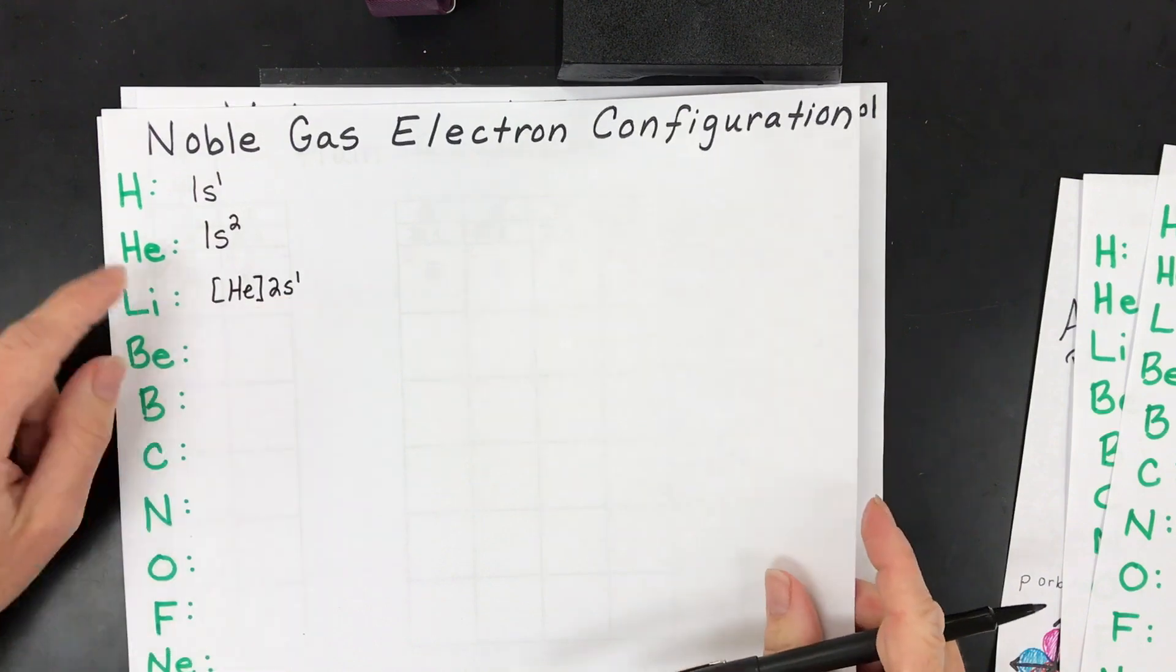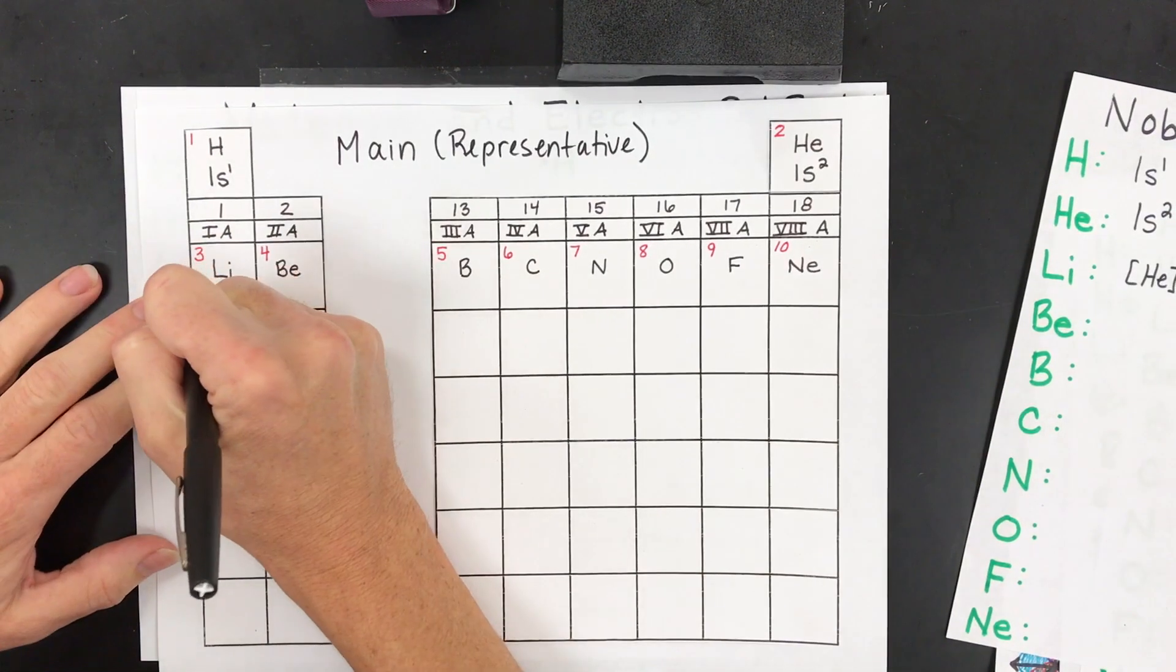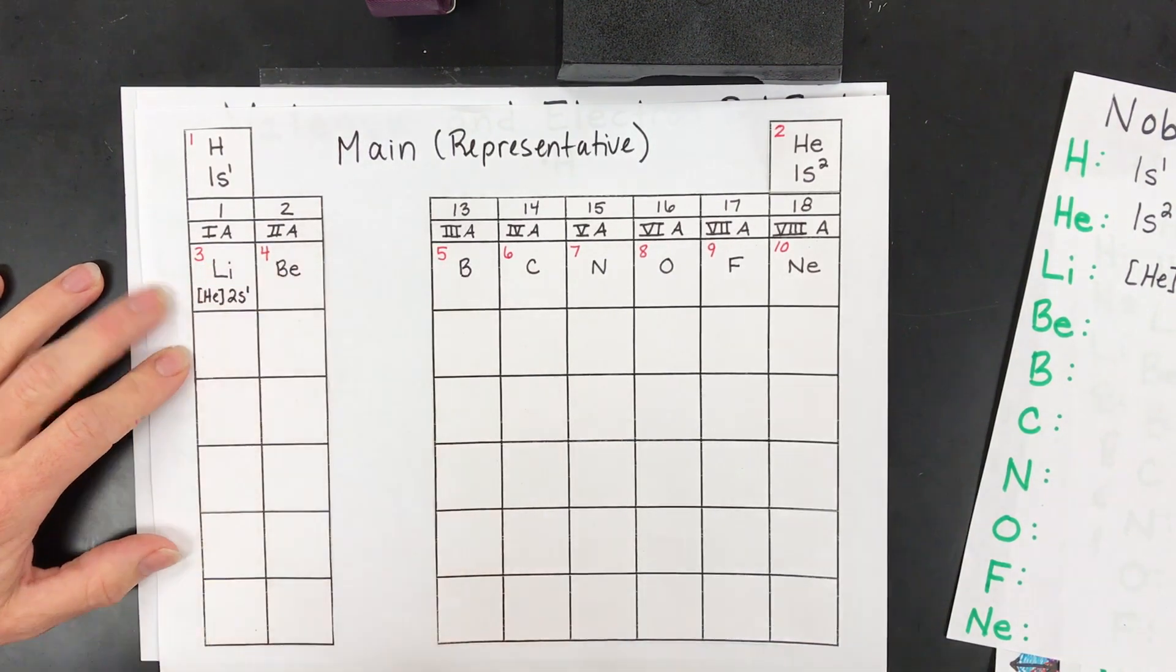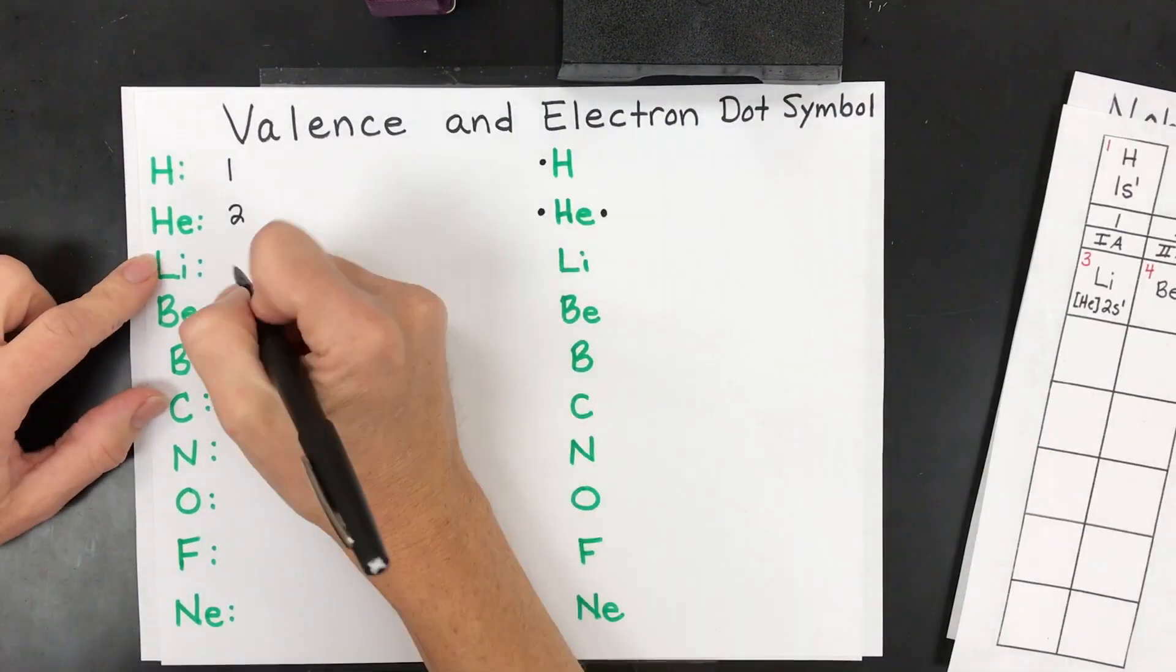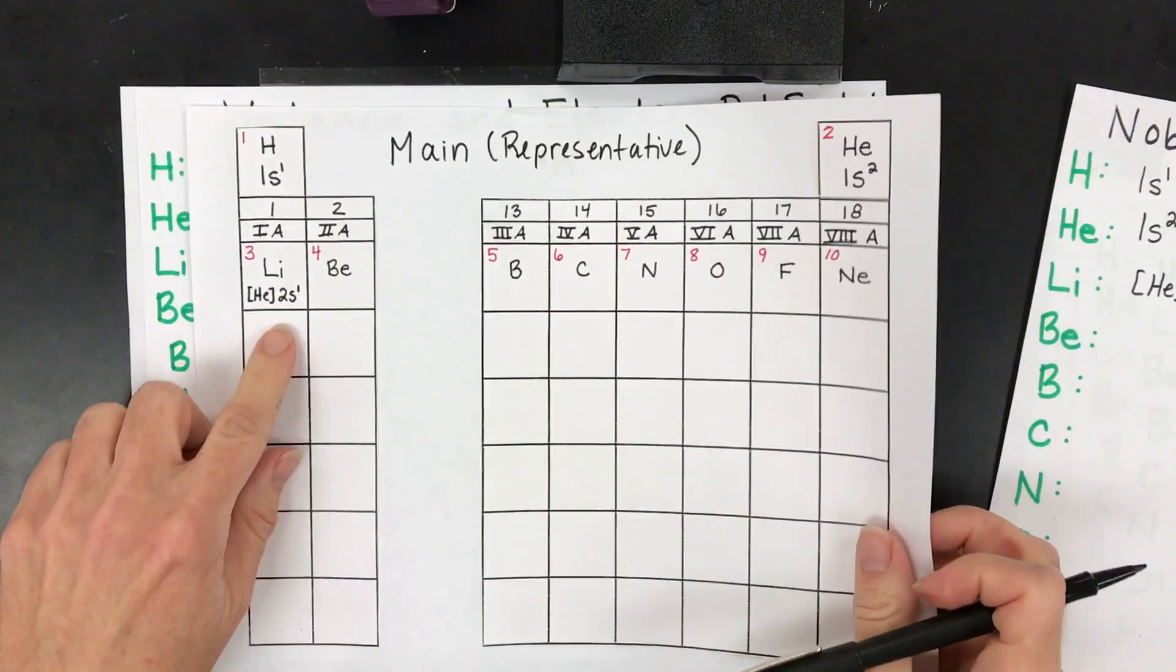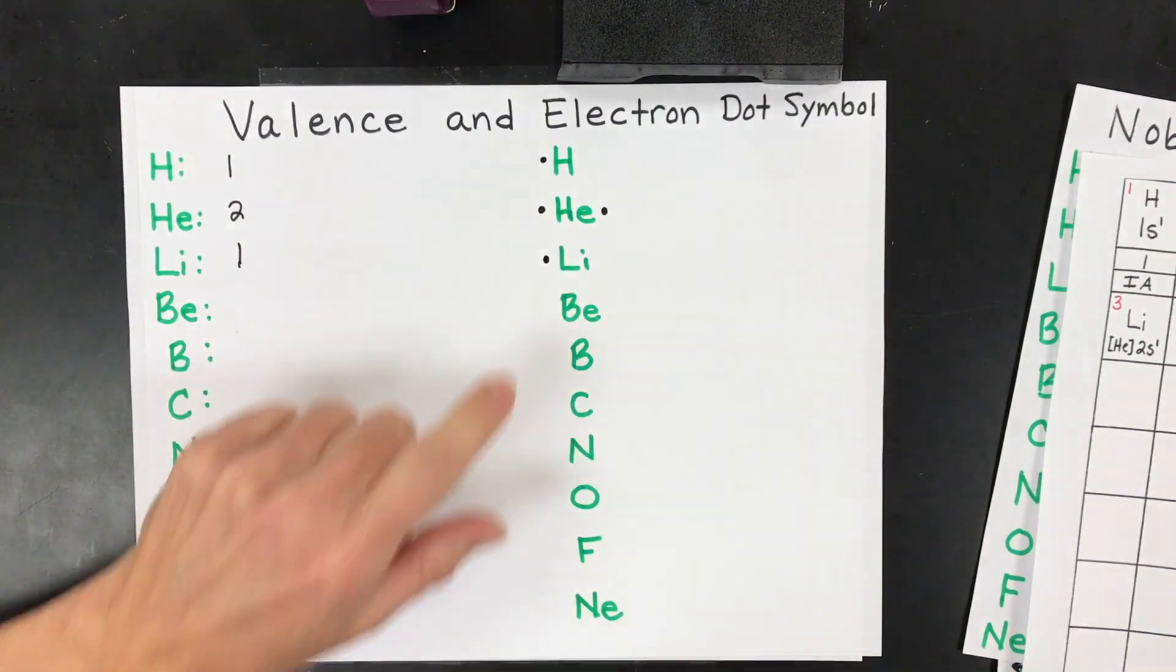That means now we're back to having only one valence. This is what's going to go on our table. So you'd write helium, 2s1. And then again, now we only have one electron in the outermost energy level, because again, we have a second energy level and there's only one electron. So we're back to having only one dot.